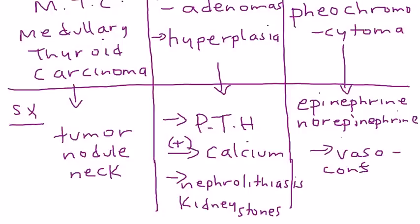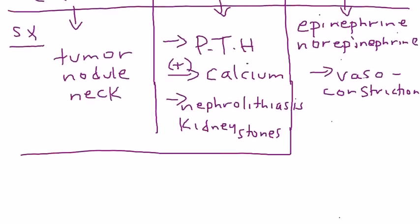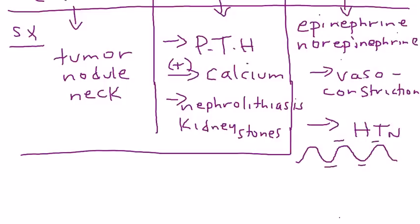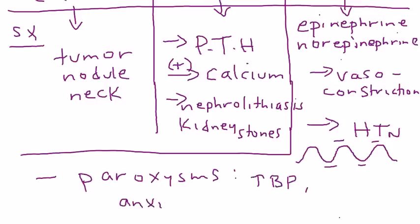Vasoconstriction causes severe high blood pressure, leading to hypertension. Importantly, the release of epinephrine and norepinephrine from the adrenal gland is episodic — blood pressure goes normal, then really high, then normal again. These episodic bursts of catecholamines from the adrenal medulla are described as paroxysms, and they produce paroxysmal high blood pressure along with other symptoms: anxiety, headaches, palpitations, and sweating.